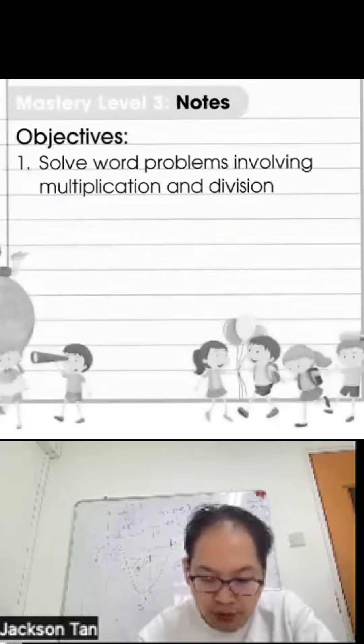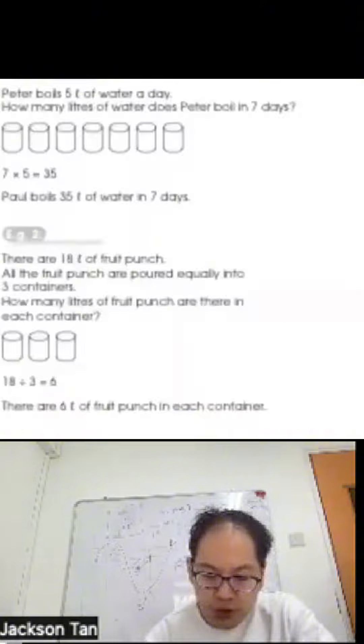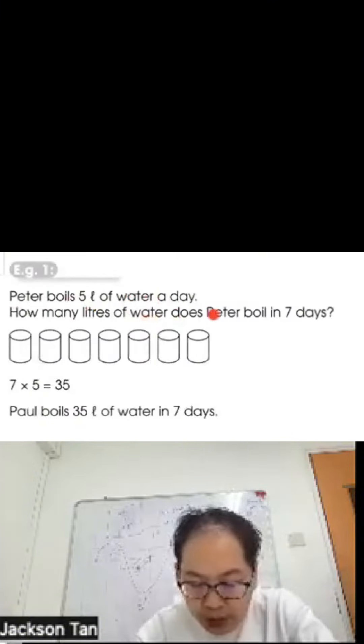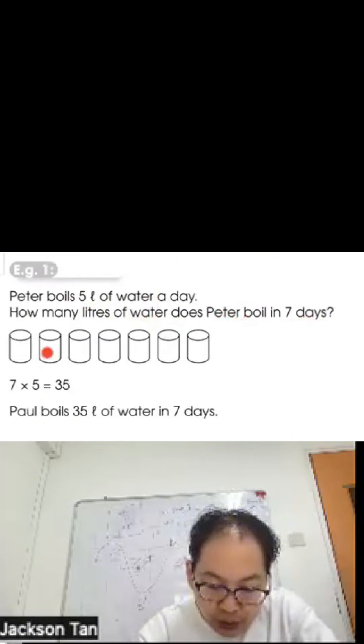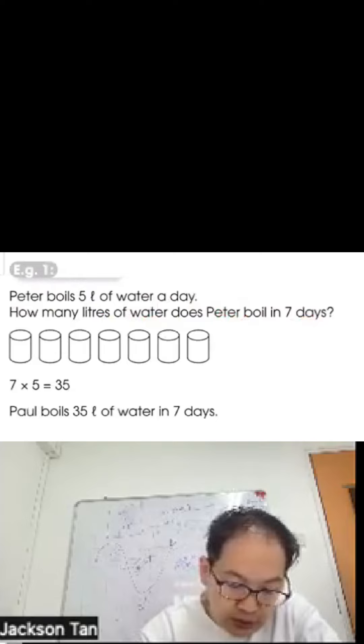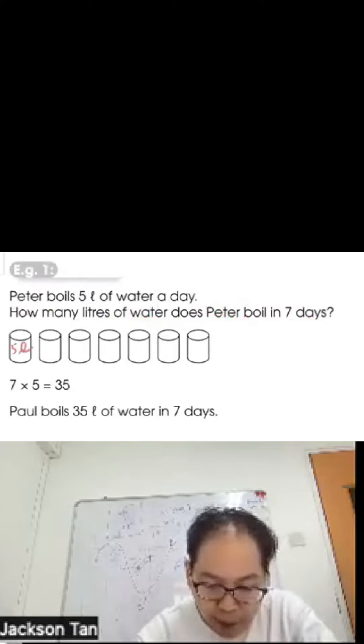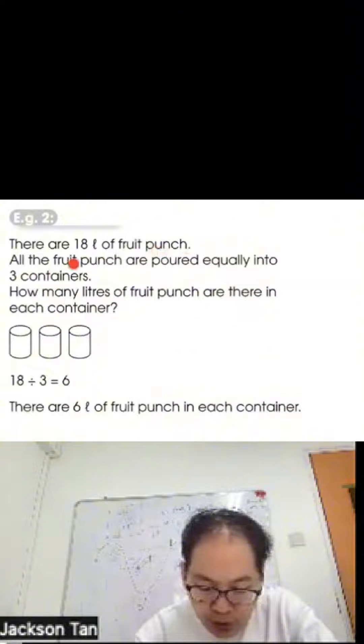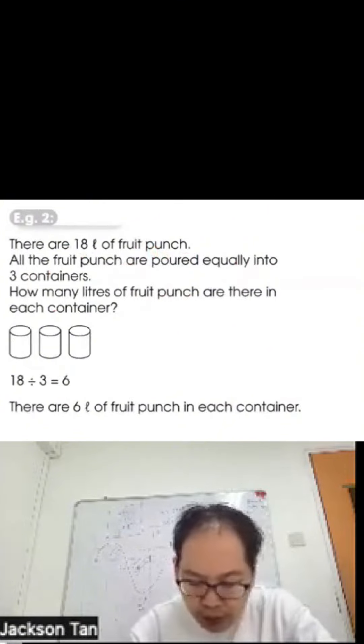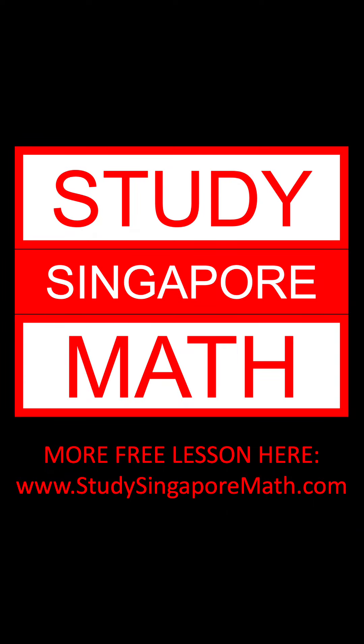Mastery level three: solve a problem involving multiplication and division. A little pot boils 5 liters of water a day. How many liters of water in seven days? If it is 5 liters, then 7 times 5 equals 35 liters of water in seven days. Example two: There are 18 liters of fruit punch. All the fruit punch is poured equally into 3 containers. How many liters of fruit punch are there in each container? So 18 divided by 3 is 6. There are 6 liters of fruit punch in each container.